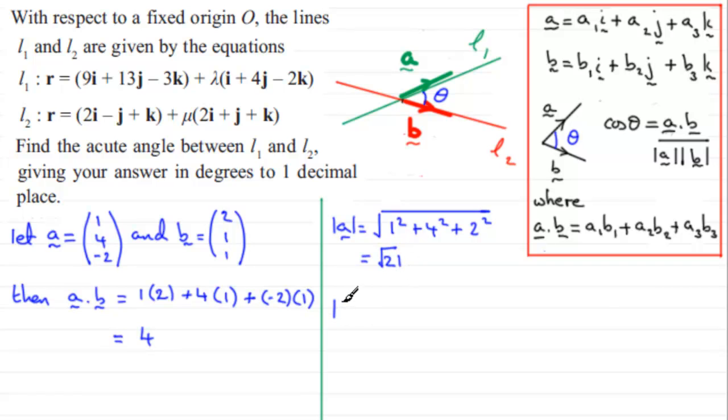Similarly, we work out the magnitude of the vector B. And that's going to be the square root of two squared plus one squared plus one squared. And this comes to a total of root six.